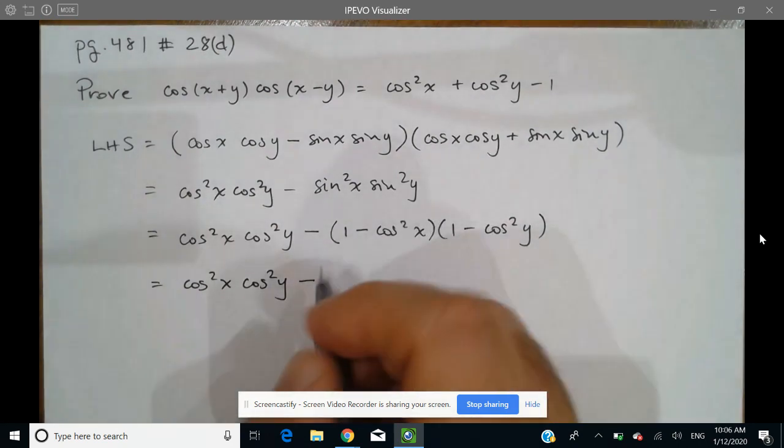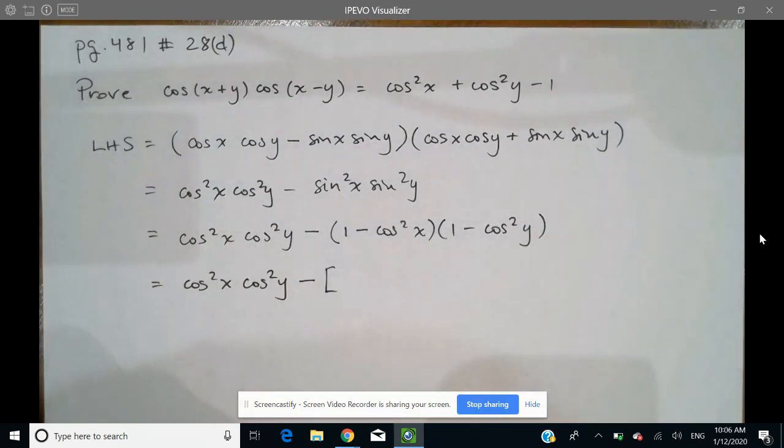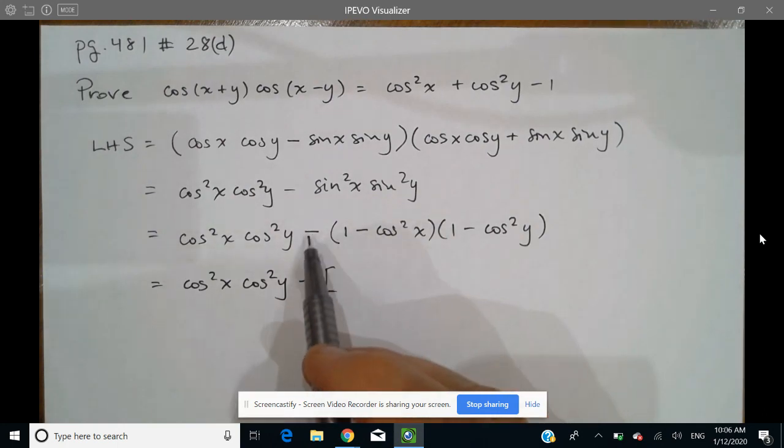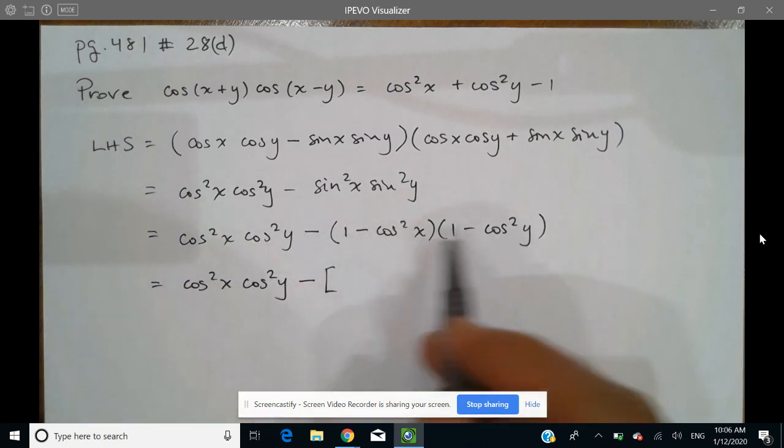Now here when I do this multiplication, please do not forget to open up your brackets. Better to do that in two steps to determine the simplification and to try to keep track of this negative as you go along.